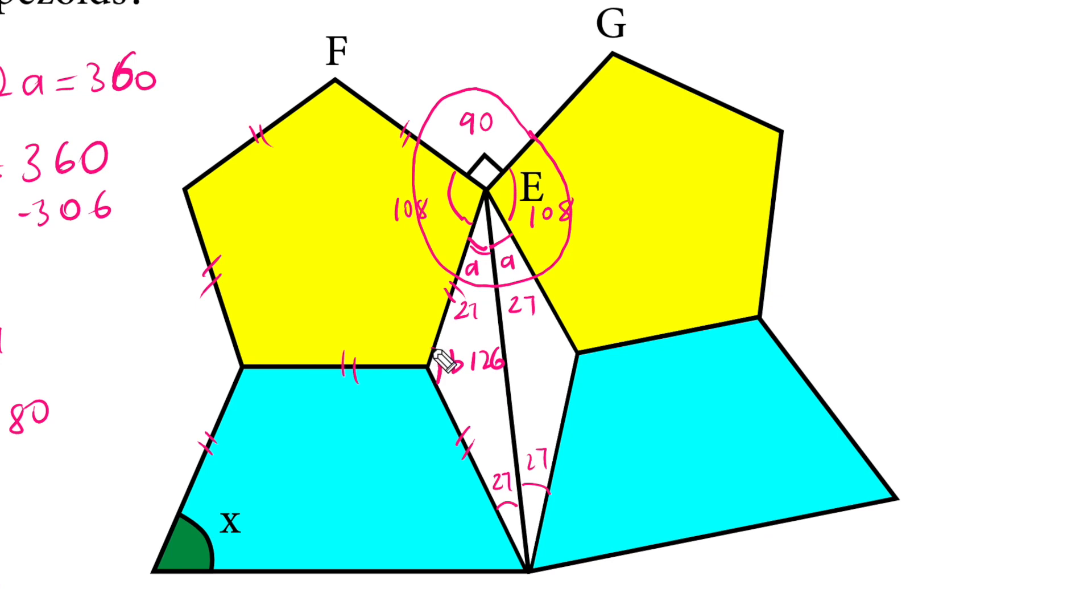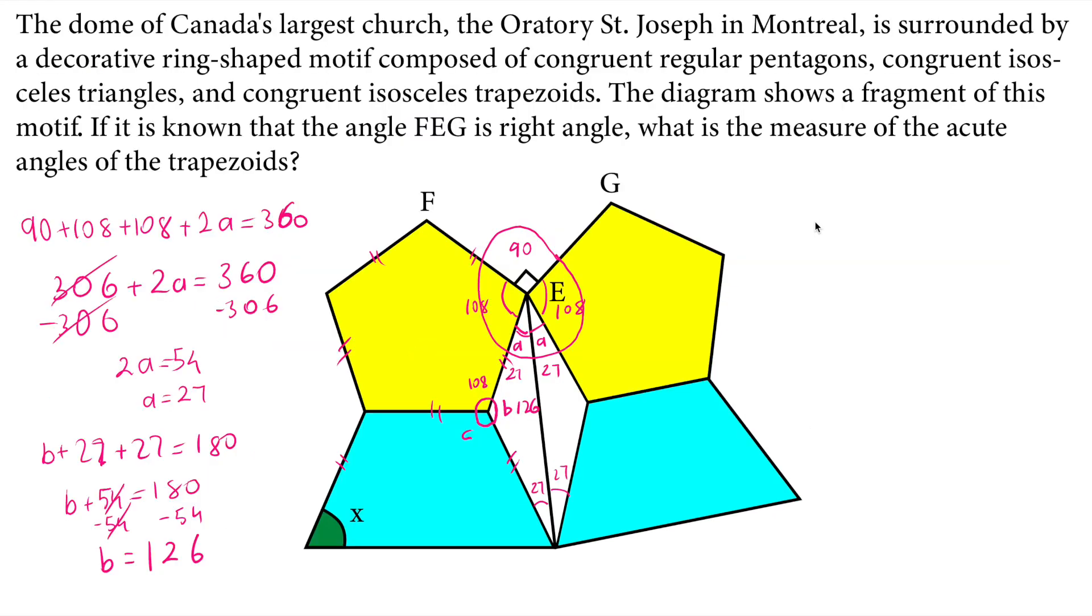So if you complete this into a circle again, another equation with the circle. 108 plus 126 plus C must equal 360. That's 234 plus C equals 360. Subtract 234 from both sides. C equals 126. So angle C here equals 126.